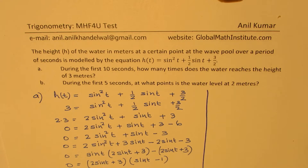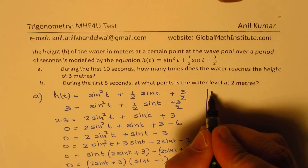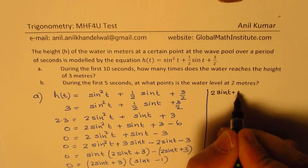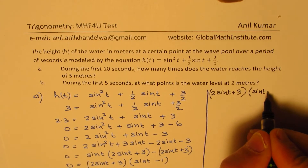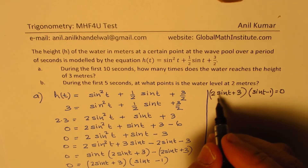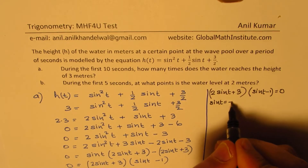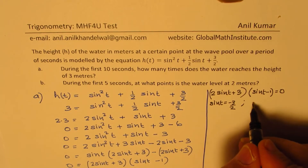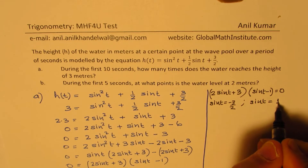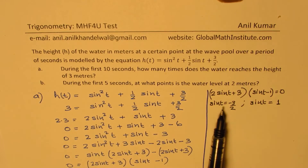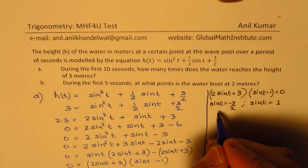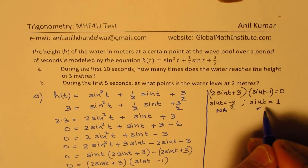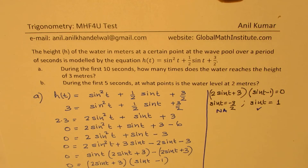Let's find the solutions. From the factored form (2sin(t) + 3)(sin(t) − 1) = 0, we get sin(t) = −3/2, or sin(t) = 1. Now sin(t) = −3/2 is not possible since sine is always between −1 and +1, so that is not applicable. However, we do have a solution where sin(t) = 1.